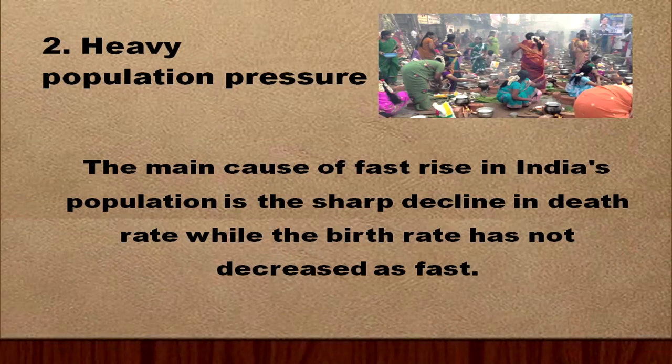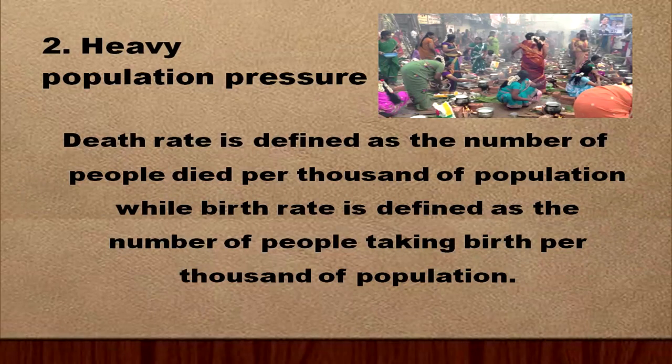The main cause of the fast rise in India's population is the sharp decline in death rate while the birth rate has not decreased as fast. As a result, the gap between the death rate and the birth rate has gone on widening. The death rate is defined as the number of people dying per thousand of population, while birth rate is defined as the number of people taking birth per thousand of population. We have a decreasing death rate and an ever-decreasing birth rate, but at a lower rate.